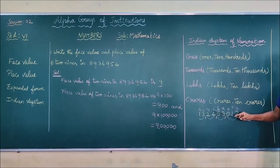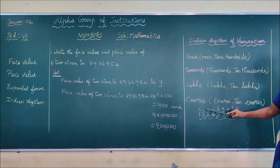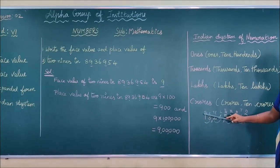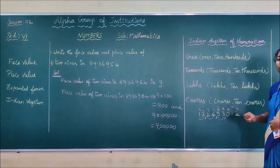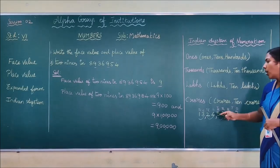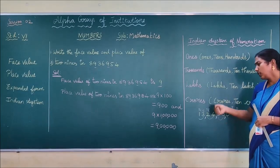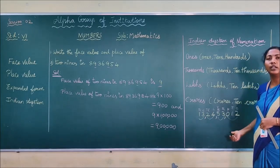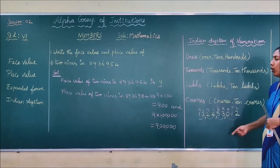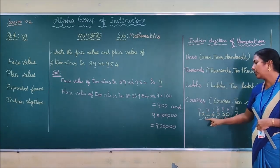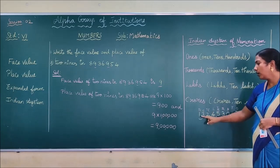For lakhs, use L. For ten lakhs, T.L. For crores, C. For ten crores, T.C. Is that clear, children? Now we are going to say the number name for this given number. You have to read this period of number.